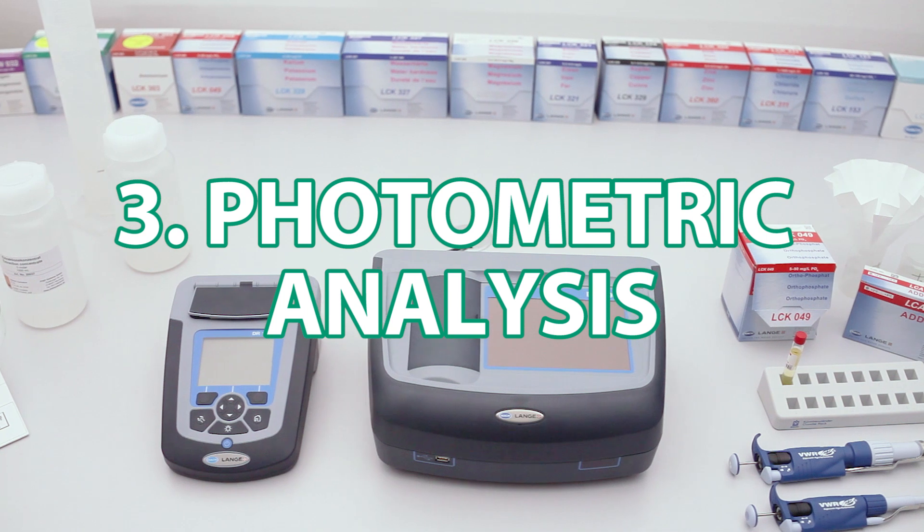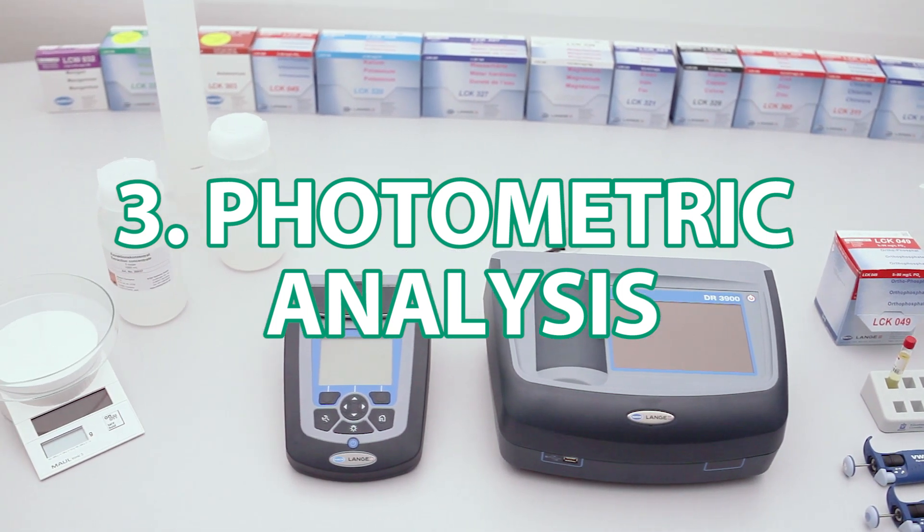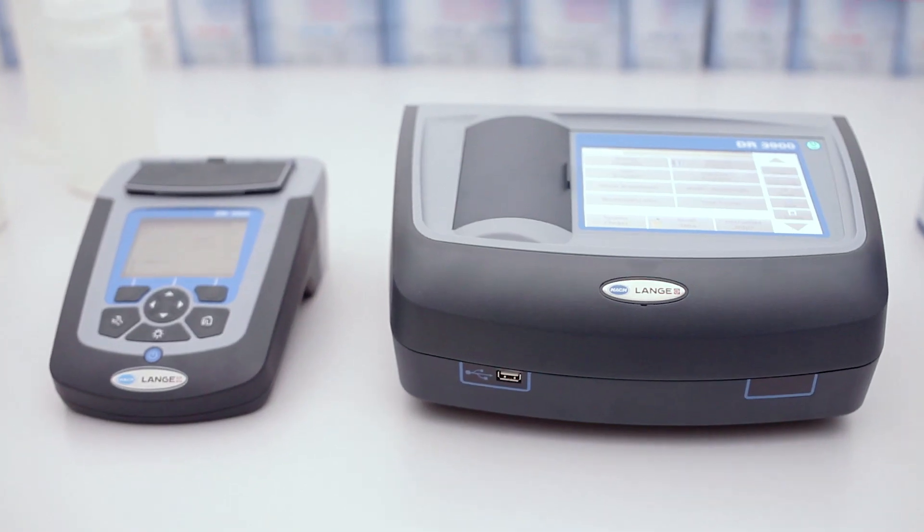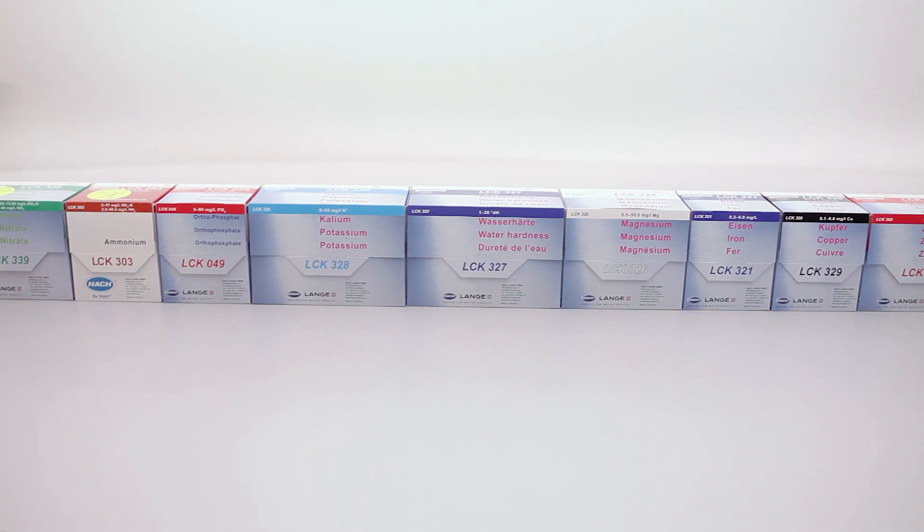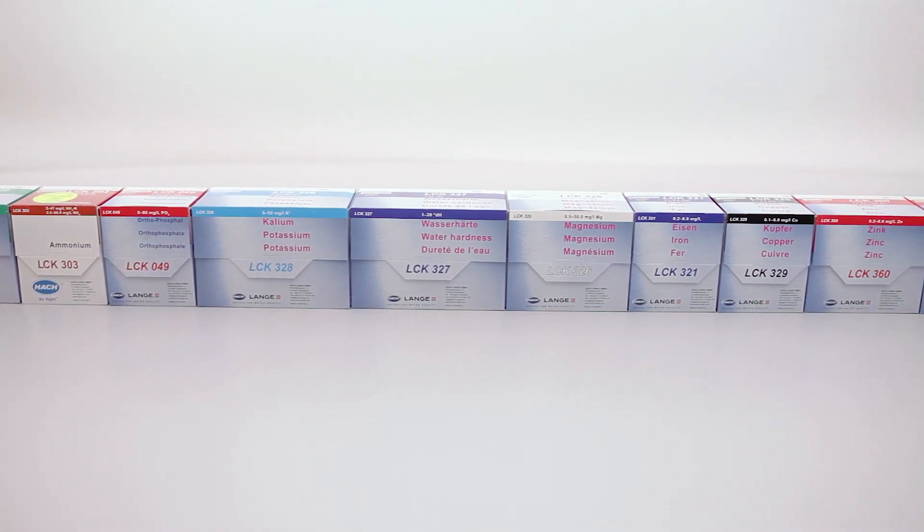When sufficient amount of sample is filtered, the third step is performing a photometric analysis, which consists of two main components: a spectrophotometer and premixed chemicals, so called Tescovets.